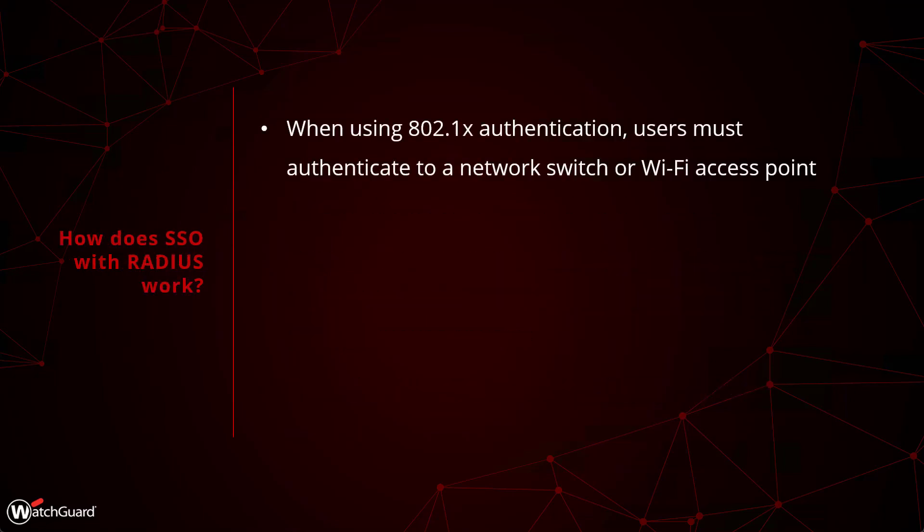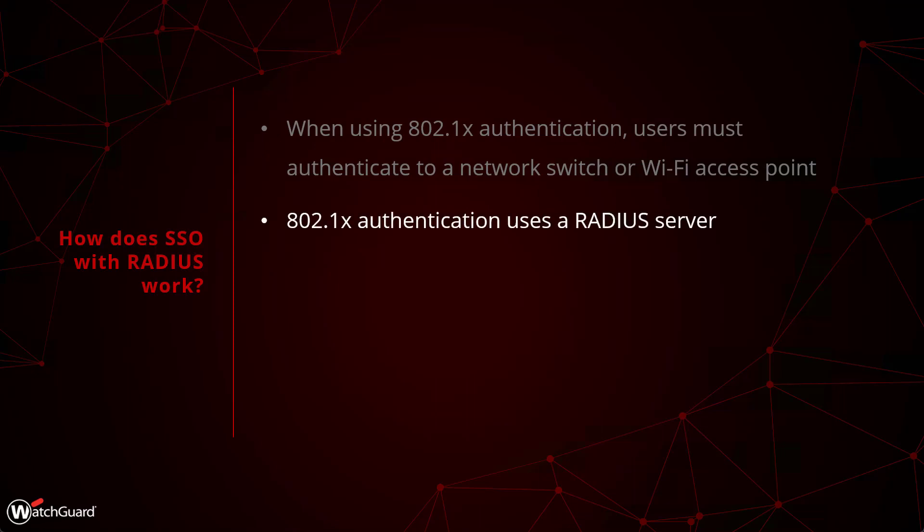In order to get this working with RADIUS, we'll be relying on the 802.1x protocol — a very well-established standard that's been around for decades and is extremely secure. The goal with 802.1x is to prevent unauthorized network access, meaning users who need to gain local access to the network must first authenticate to a RADIUS server. This authentication can be enforced through network switches or Wi-Fi access points, and users can't pass any traffic on the network at all until they have authenticated to the RADIUS server.